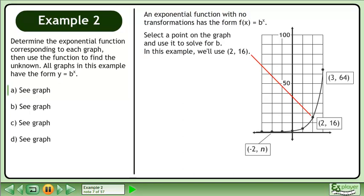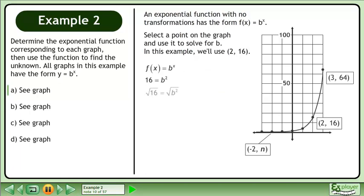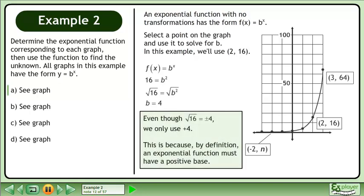Select a point on the graph and use it to solve for b. In this example, we'll use the point (2, 16). Begin with the exponential form f equals b to the power of x. Plug in the point, then take the square root of both sides. The b value is 4.